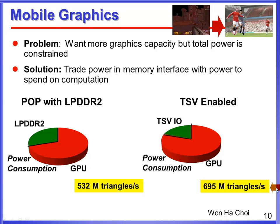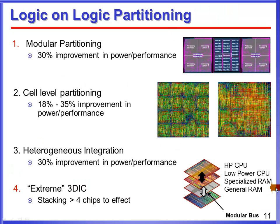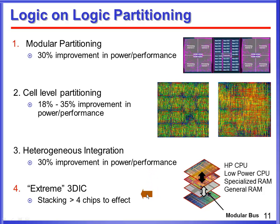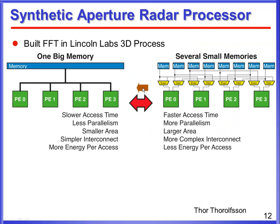This addresses the dark silicon problem, wherein you can't turn on all the chip due to total power constraints. This leads me into different modes of partitioning: modular partitioning, cell-level partitioning, heterogeneous integration — where we demonstrated a 30% improvement in power performance — and partitioning across an extreme 3D stack with more than four chips. I'll focus only on the first two of these in the rest of this talk.